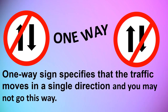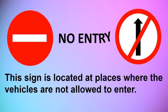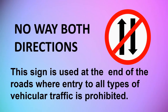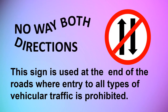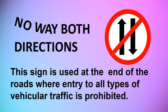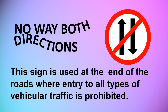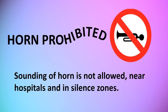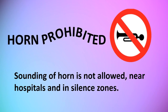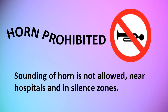No Entry: this sign is located at places where vehicles are not allowed to enter. No Way Both Directions: this sign is used at the end of roads where entry to all types of vehicles is prohibited. No Horn: this sign means sounding of horn is not allowed near hospitals and in silence zones.